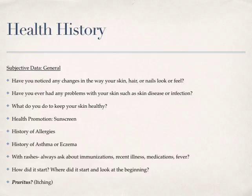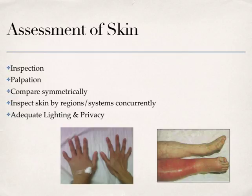Assessment always begins with inspection, which starts as soon as you walk in the room. Look at your patient's face, skin around their eyes, neck, and hands — do a general survey right away. Always compare symmetrically; look at both sides. For example, with an IV infiltration, you might see generalized swelling on one hand that you wouldn't notice without comparing it to the other hand. The same applies to legs — you really have to look at both sides.